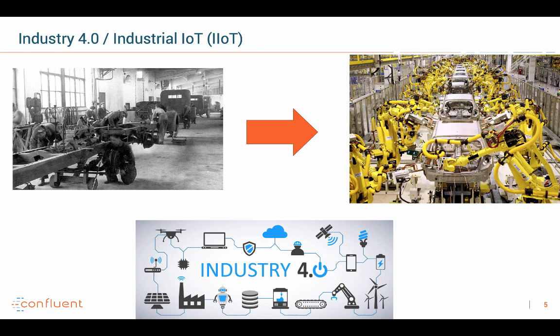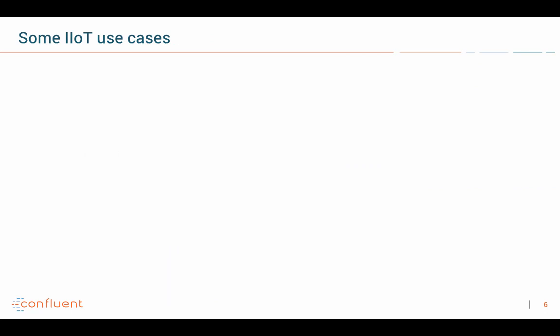Many people are talking about Industry 4.0 or industrial IoT. The main goal is to automate manufacturing more and more — going from very manual steps to automated intelligence to be more efficient and less costly. That's the main intention of IIoT: automate all the things, scale it up, be more reliable, more secure, and leverage the data produced under the hood to improve the processes even more.